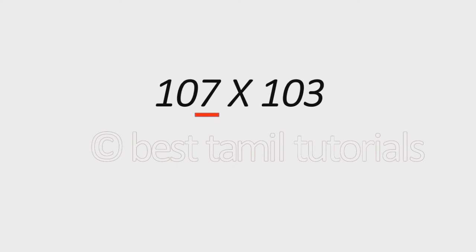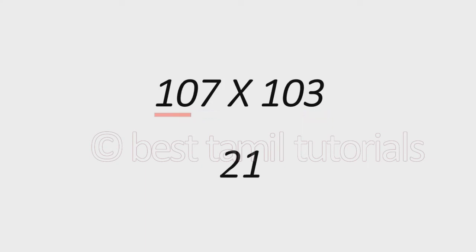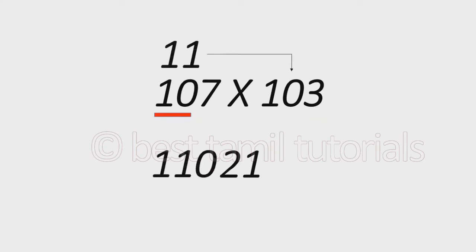Let's look at one more example with the pattern: 7 into 3, where 7 plus 3 is 10, which satisfies the last-digit condition. The same formula applies: 7 into 3 is 21, and the number is 11. So 11 into 10 equals 110.